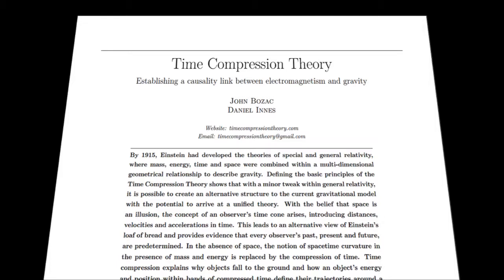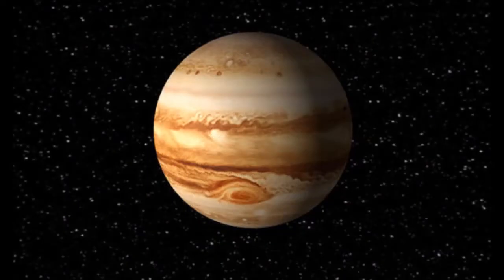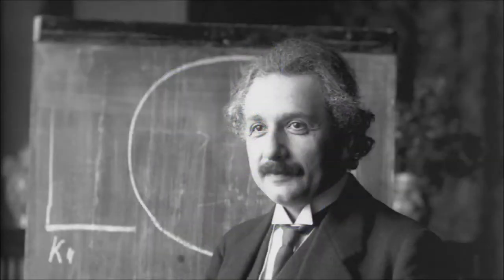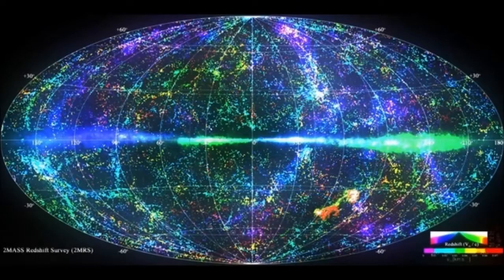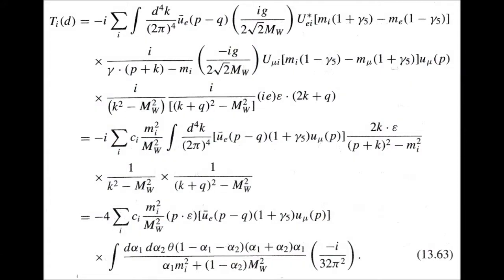The time compression theory presents an argument that the incompleteness of general relativity led science down the wrong path. This has led physicists searching for a non-existing connection between the very large and the very small. Einstein's logic as a whole is certainly correct, resulting in the predictions of black holes, gravitational lensing, and the expansion of the universe, but it is incompatible with quantum field theory.